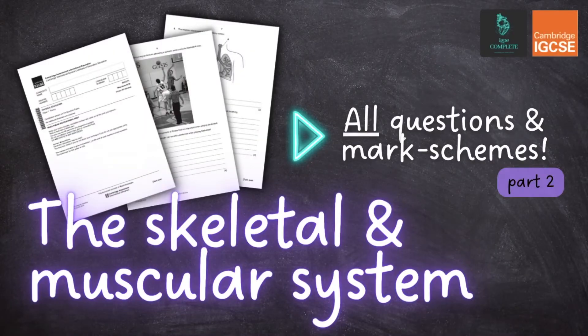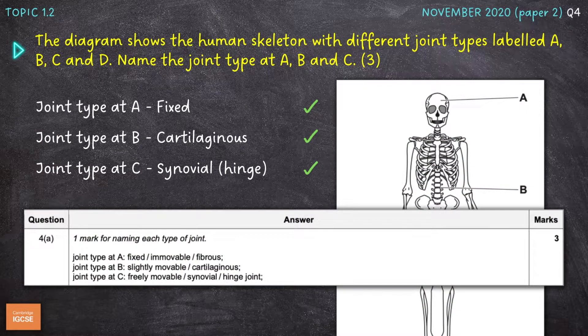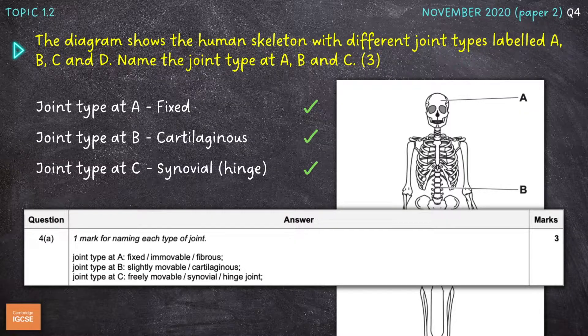Hello and welcome to another complete Cambridge IGCSE PE lesson. In this video, we'll break down and simplify 17 recent past exam questions on Chapter 1, the skeletal and muscular system. If you enjoy this video, consider subscribing to the channel.